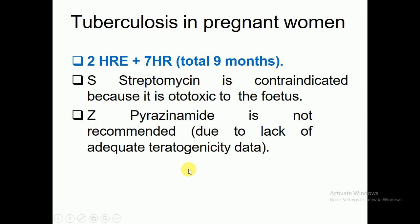For tuberculosis in pregnant women, the recommended regimen is 2HRE plus 7HR — ethambutol, rifampicine, and isoniazid. Streptomycin (S) is contraindicated because it is ototoxic and may cause ototoxicity in the fetus. Pyrazinamide (Z) is not recommended due to insufficient teratogenicity data.